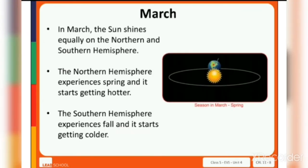In March, the sun shines equally on Northern and Southern Hemisphere. In March, equal amount of sunlight is received on both hemispheres. The Northern Hemisphere experiences spring and it starts getting hotter, and the Southern Hemisphere experiences autumn or fall and it starts getting colder.